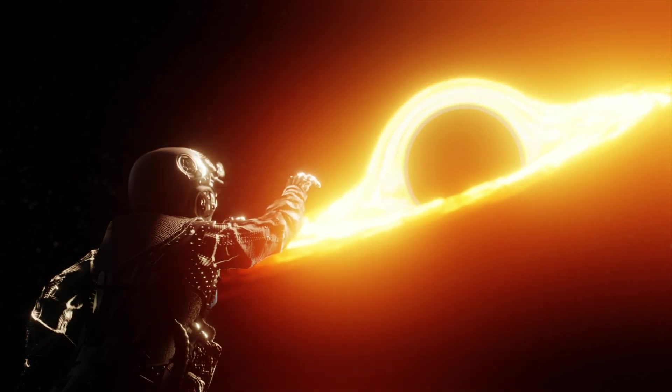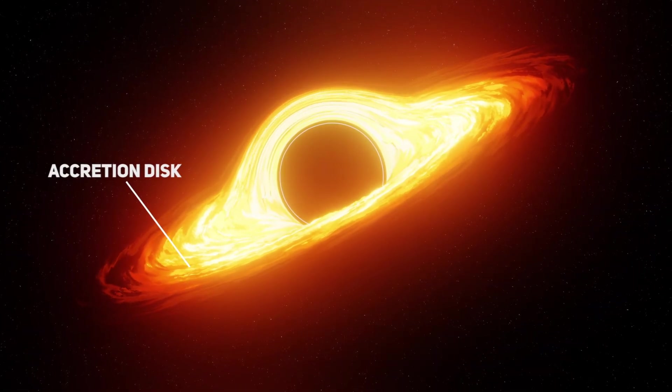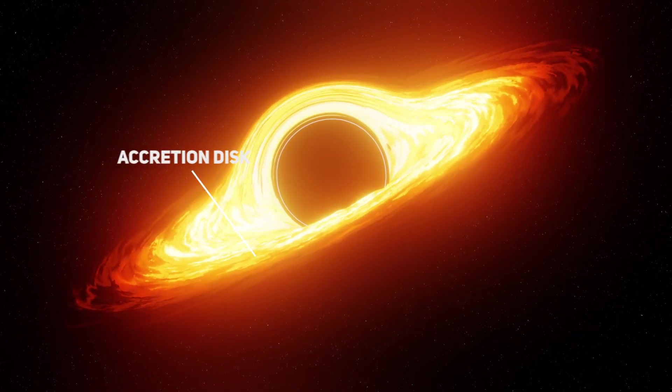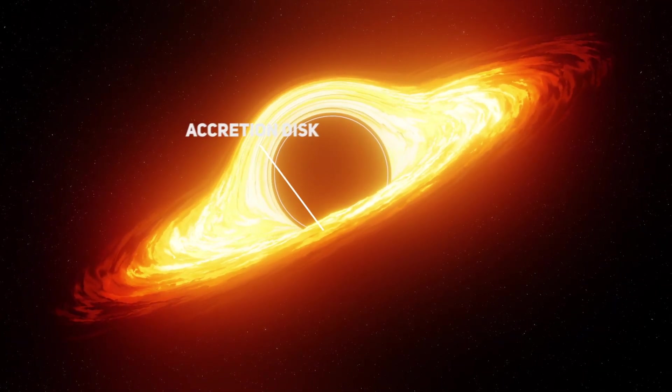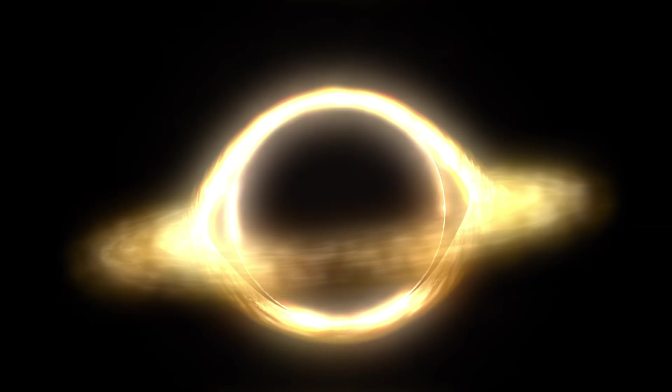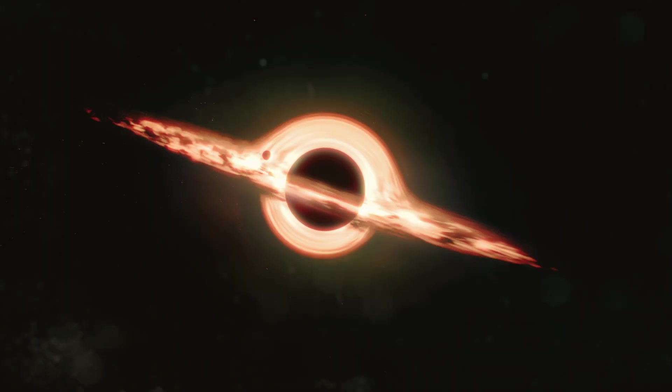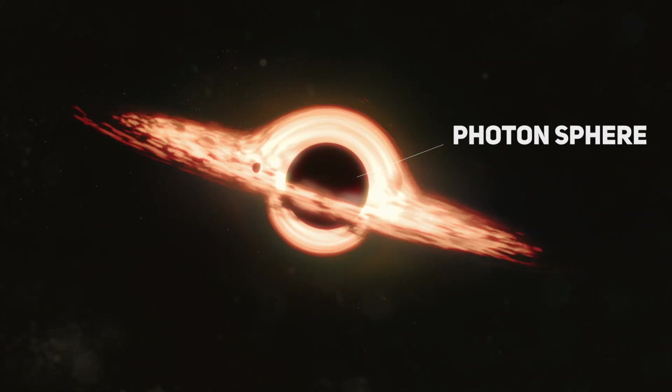A black hole itself is structured in different parts. An accretion disk is a structure that forms around a central object such as a black hole or young star when matter spirals inward due to gravitational forces. It is like a flattened disk structure composed of gas, dust, and other material that is being pulled into the center by the strong gravitational pull of the central object.